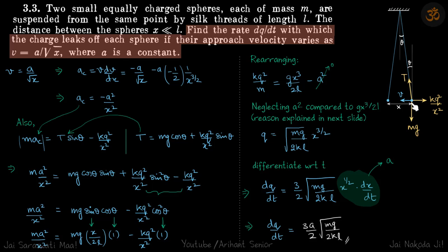We are given two balls of mass m hanging by a thread of length l, and the distance between them is given as x. If they are approaching each other with a velocity a by root x, we need to find the rate dq by dt with which the charge leaks off.